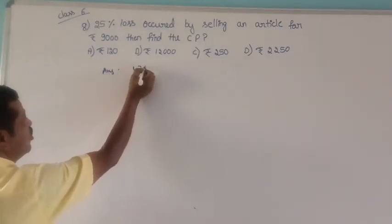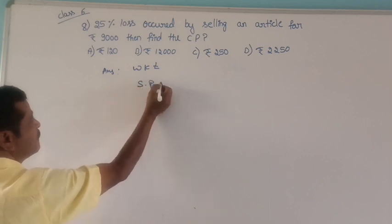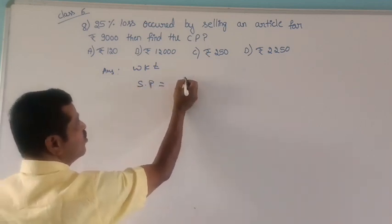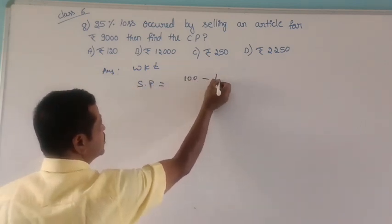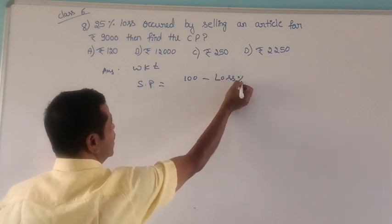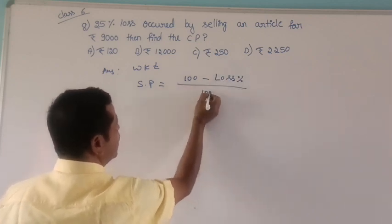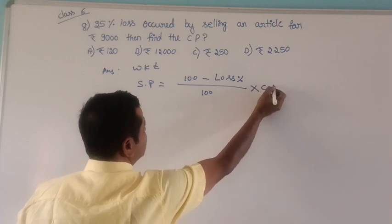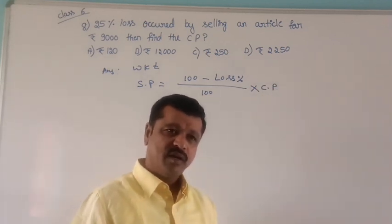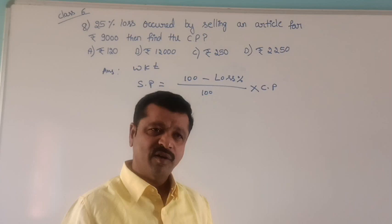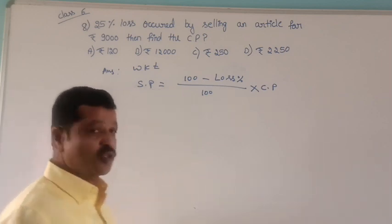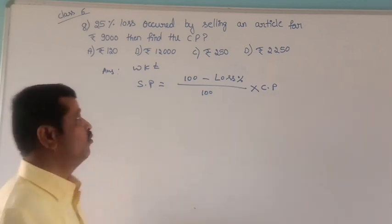We know that formula: SP is equal to 100 minus loss percentage divided by 100 into CP. So substitute the values.